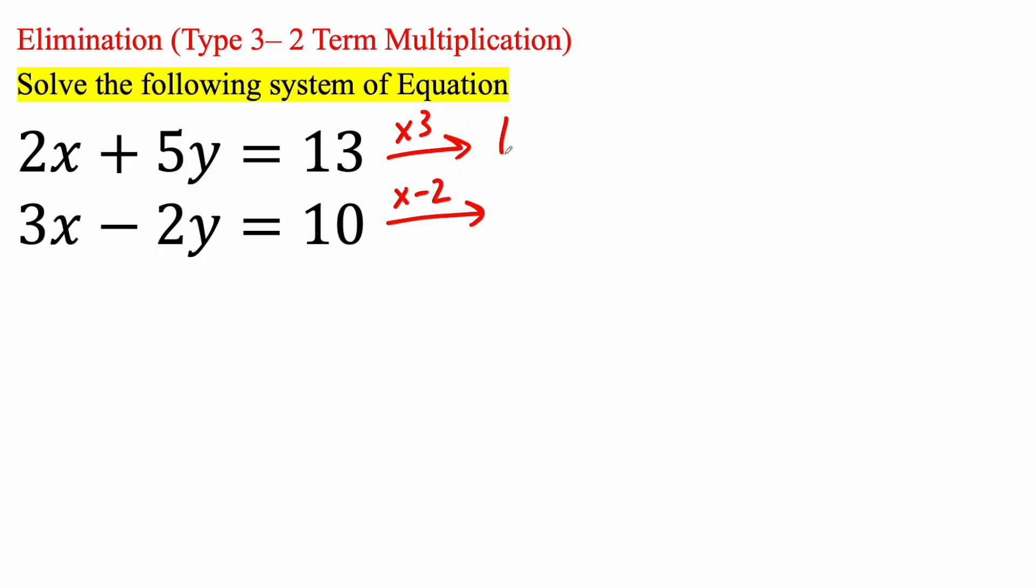So, 2x times 3 will give us 6x plus 5y times 3 is going to give us 15y is equal to 13 times 3 is 39.